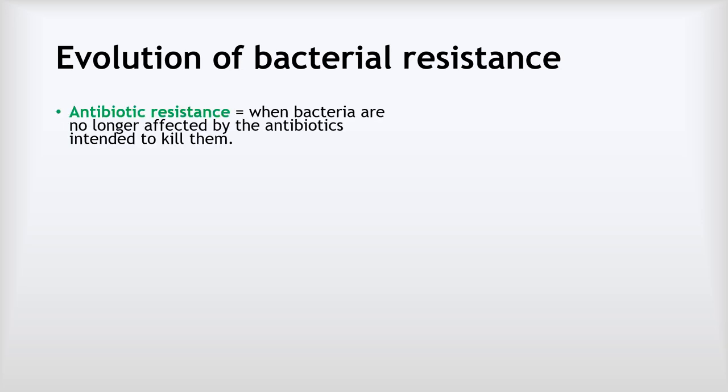A really good example of evolution is shown by bacterial resistance. Antibiotic resistance is when bacteria are no longer affected by the antibiotics intended to kill them. If you go into hospital for an operation, they'll always give you antibiotics to kill any bacteria that might have got into your body. The big problem is that many of those antibiotics now don't work as well because of the evolution of antibiotic resistance. This is a really good case study of exactly how evolution works.